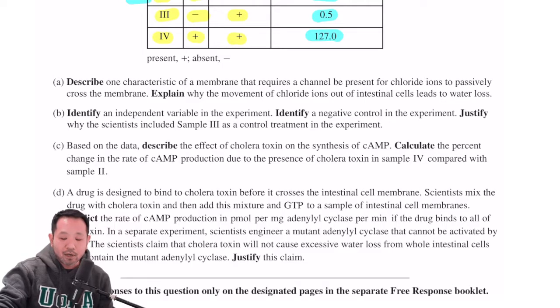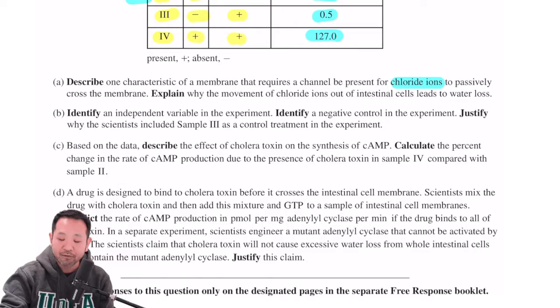So let's go ahead and tackle the problems. Part A says, describe one characteristic of a membrane that requires a channel to be present for chloride ions to passively cross the membrane. Explain why the movement of chloride ions out of the cell likely leads to water loss. So here,